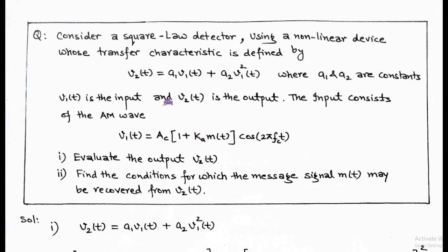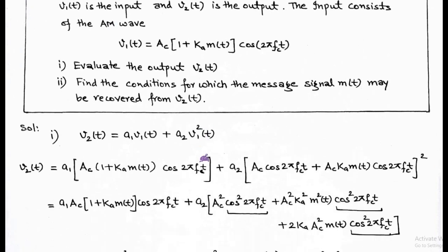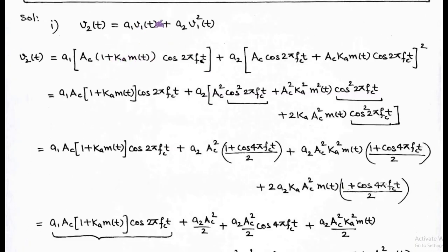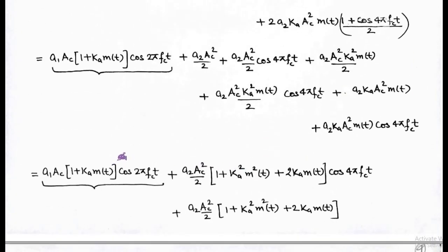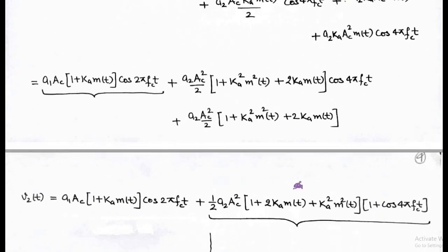According to the question, we have a square law detector with characteristic v2(t) = a1·v1 + a2·v1². Substituting v1 = Ac·[1 + ka·m(t)]·cos(2π·fc·t) and expanding the squared term using (a + b)², after arrangement we get: the first term a1·Ac·[1 + ka·m(t)]·cos(2π·fc·t), and the second term (a2·Ac²/2)·[1 + ka²·m²(t) + 2ka·m(t)]·(1 + cos(4π·fc·t)).